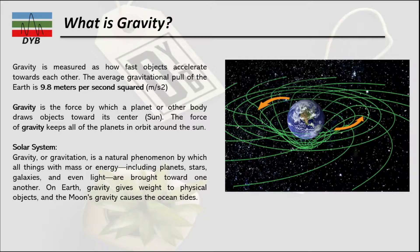When talking about the gravity of the Earth, the Moon is a good example — the Moon keeps rotating around the Earth because of Earth's gravity. More generally, gravitation is a natural phenomenon by which all things with mass or energy, including planets, stars, galaxies, and even light, are brought toward one another. Gravity gives weight to physical objects, and the Moon's gravity causes the ocean tides.